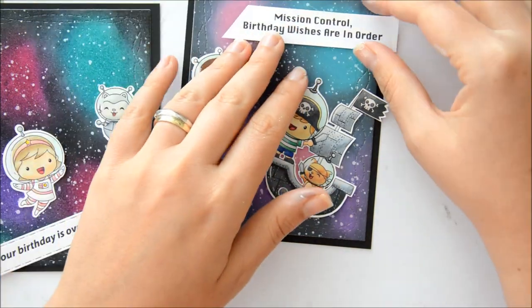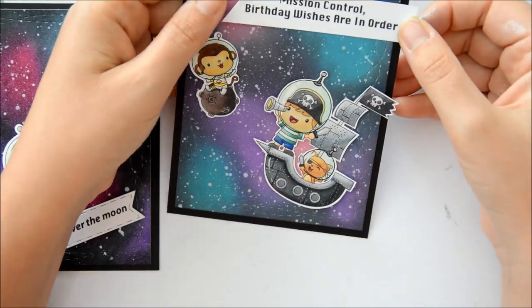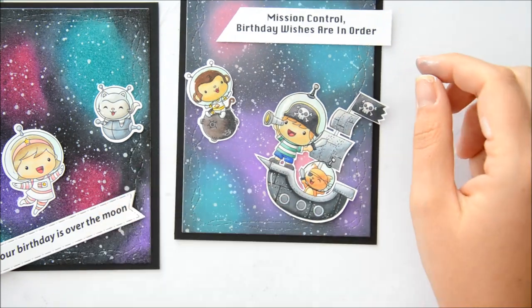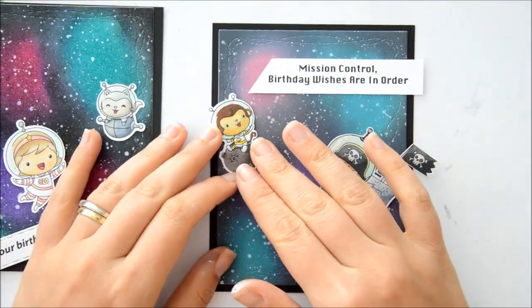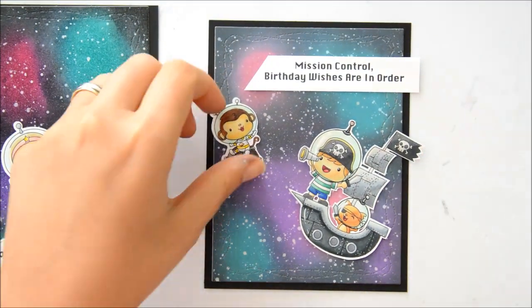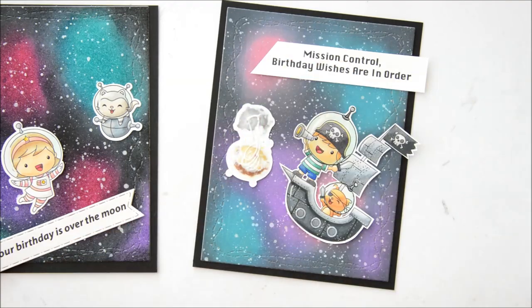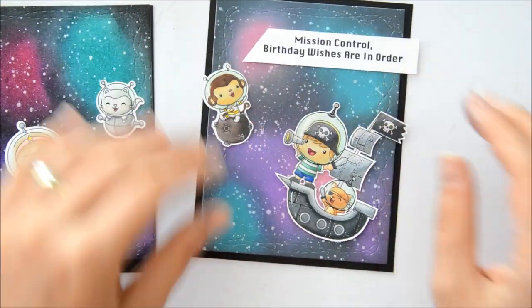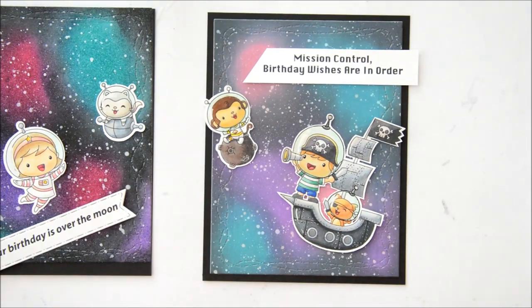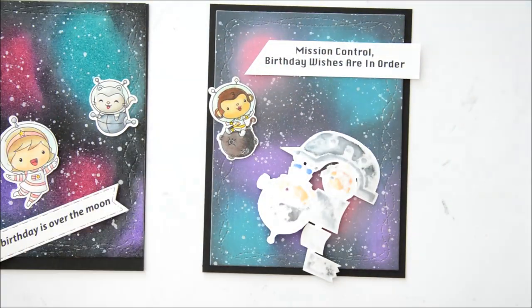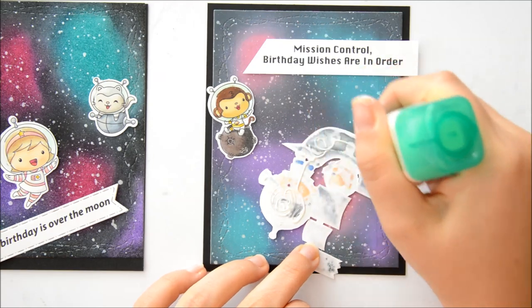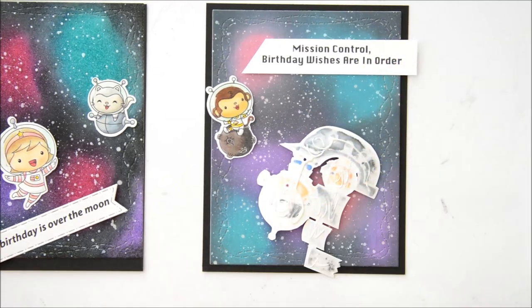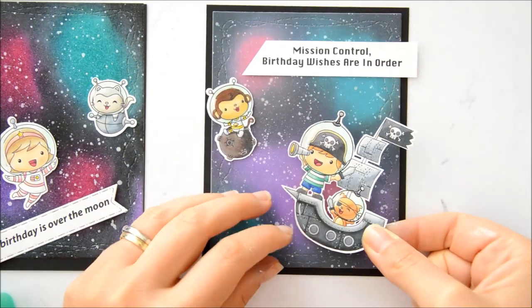And I am now adhering this sentiment banner that I cut down from Neenah Solar White cardstock, which is also the cardstock I used to print my images on. So I made this banner using my guillotine trimmer. And to glue down my images, I am using my Tombow Mono Multi glue. Because liquid adhesive gives you a little bit of time to wiggle things in place and have them positioned as you want them. So I tend to use it especially for my images when I can.